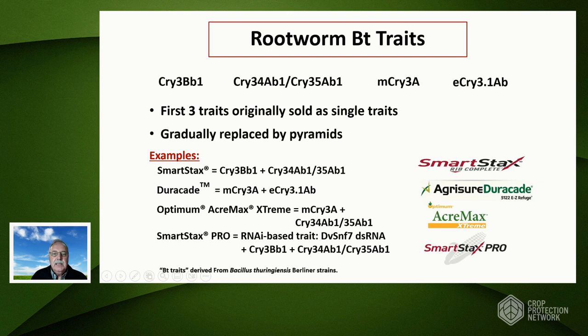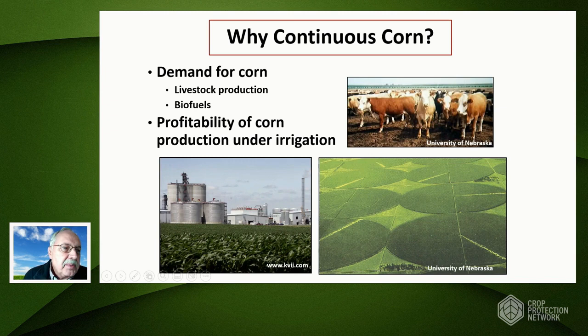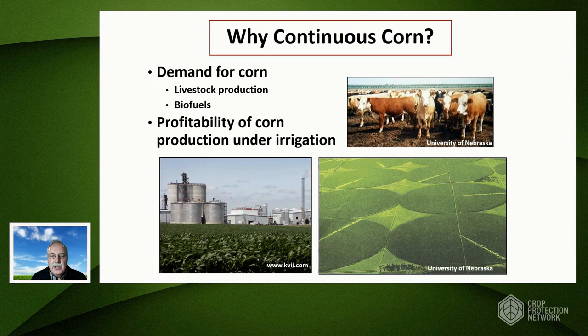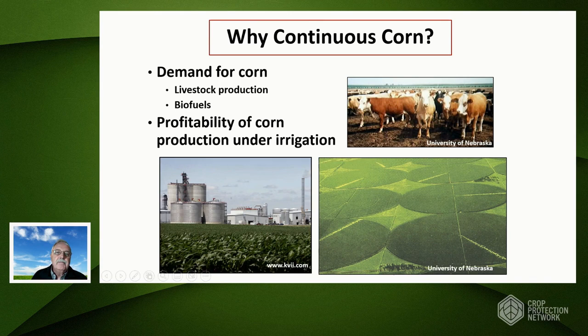You may be thinking: if crop rotation works so well, why continuous corn? The main reason is very high demand for corn in the U.S. Corn Belt. Many areas have significant livestock production requiring large amounts of corn for feed, and we also have a strong biofuel industry. In the Western Corn Belt where we have center pivot irrigation, corn is very profitable — in a lot of years more profitable than alternative crops. These are the reasons we see continuous corn in the Corn Belt.